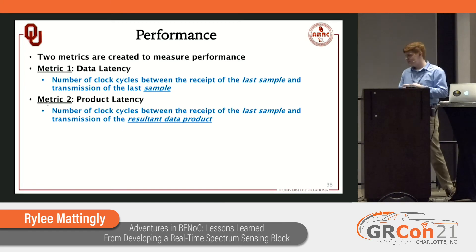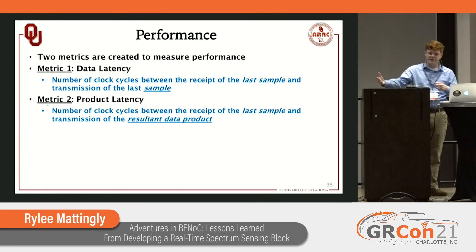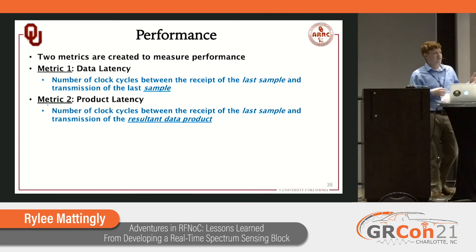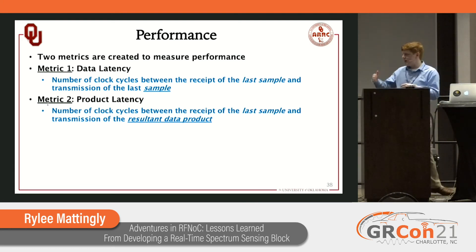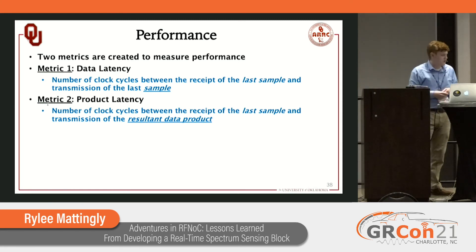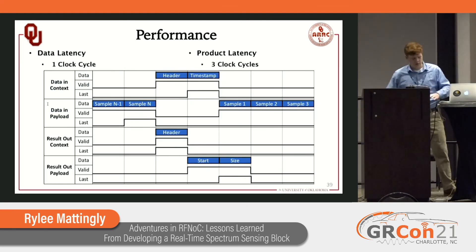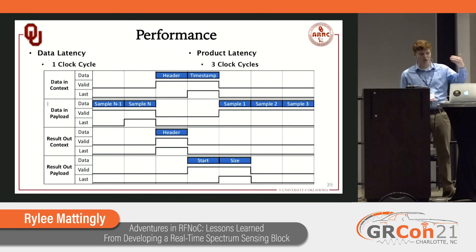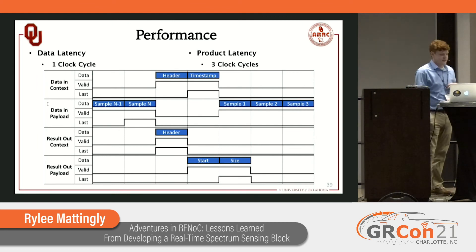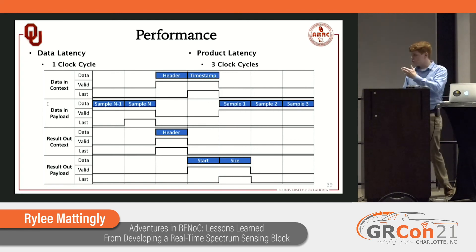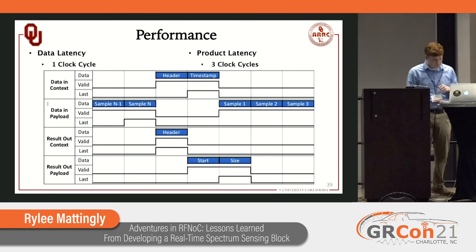First, we have a data latency metric, which tells us how many clock cycles elapsed between receipt of the last sample before we transmitted that last sample to our recipient block. Second, we have product latency: how many samples did it take after we received the last sample for us to actually find the FSS results and send that along to the next block out of its port? Our data latency was one clock cycle — we never halted the stream, assuming the recipient block always kept its T-ready flag asserted.